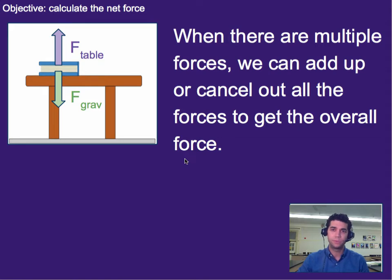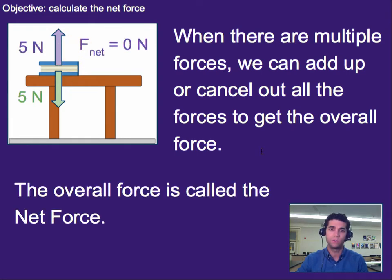All right, so when there are multiple forces acting on an object we can add up or cancel out all of the forces to get the overall force on an object. So for example, a book sitting on a table, you have the table pushing up on it, gravity pulling down on it, and those two are canceling out. So we would say the net or overall force is zero. This idea of net force is the same thing as the idea of overall force. The more formal term for it is just called net force and we'll represent it with an F and then net down here as the subscript.